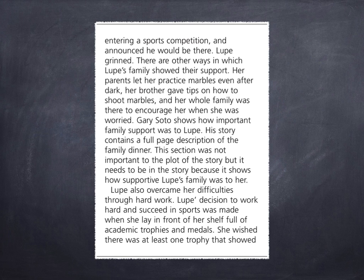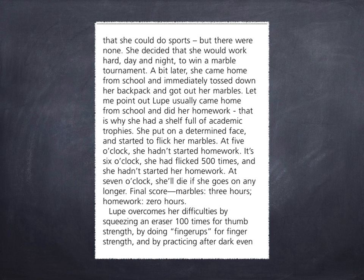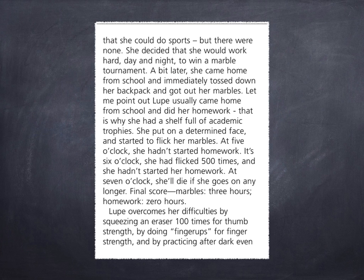Lupe also overcame her difficulties through hard work. Lupe's decision to work hard and succeed in sports was made when she lay in front of her shelf full of academic trophies and medals. She wished there was at least one trophy that showed she could do sports, but there were none. She decided she would work hard day and night to win a marble tournament. A bit later, she came home from school and immediately tossed down her backpack and got out her marbles. She put on a determined face and started to flick her marbles. At 5 o'clock, she hadn't started homework. At 6 o'clock, she had flicked 500 times and still hadn't started her homework. At 7 o'clock, she'll die if she goes on any longer. Final score — marbles: 3 hours, homework: 0 hours.